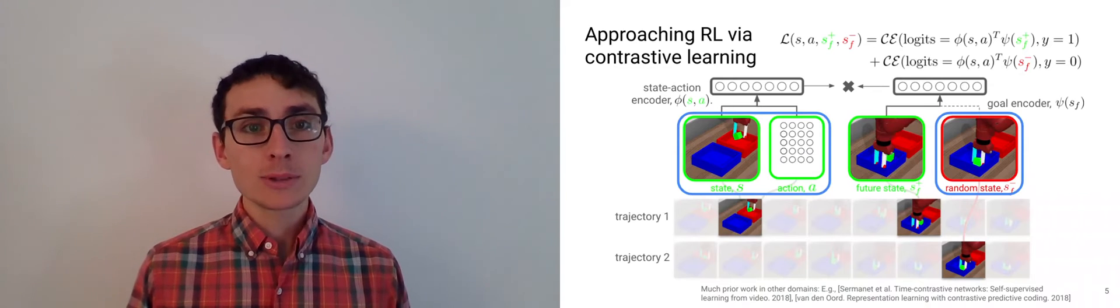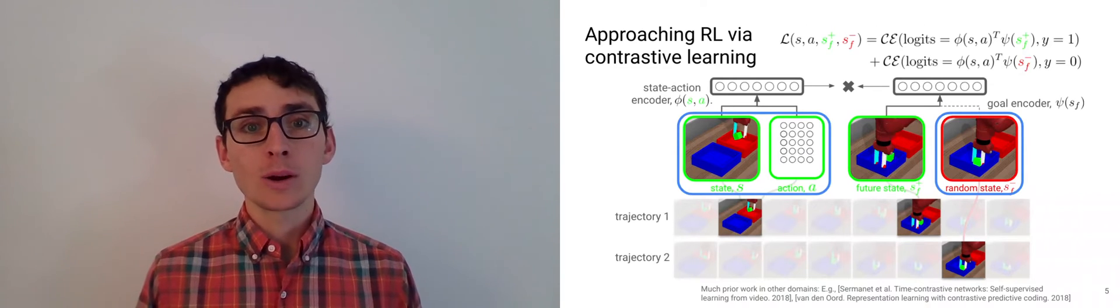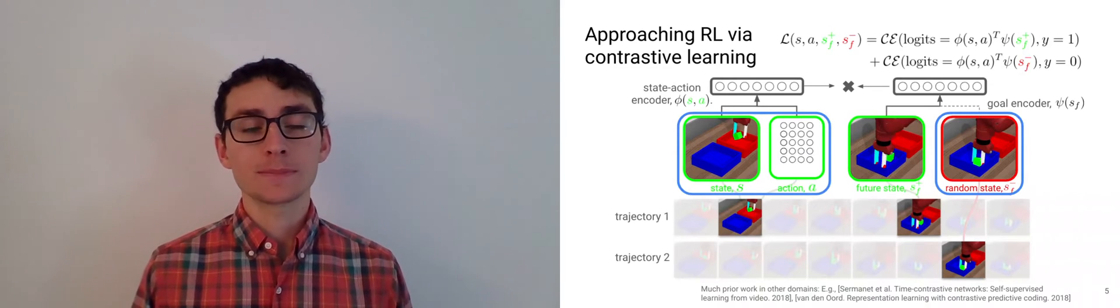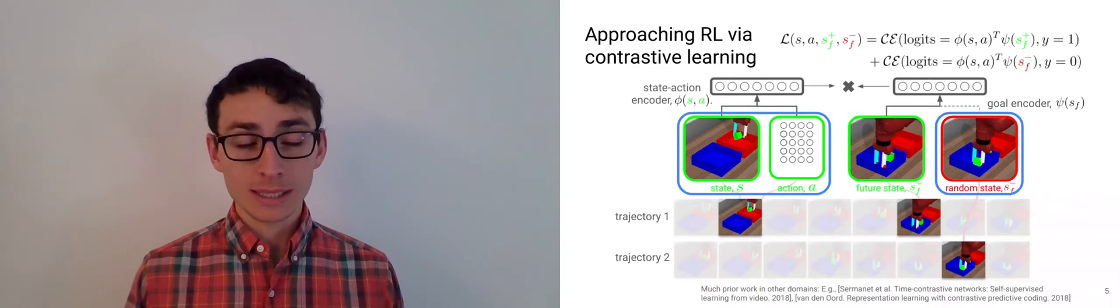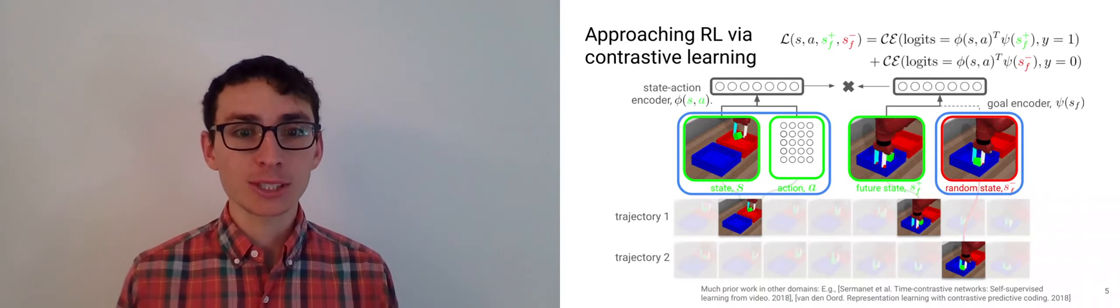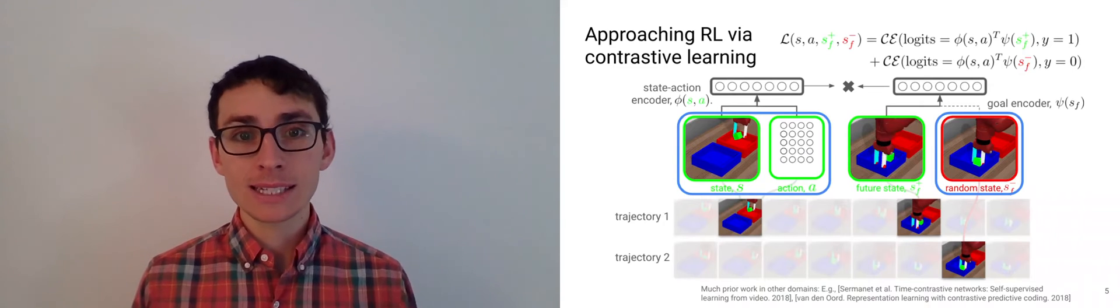Now, intuitively, these representations will allow us to reason about what states are we likely to visit in the future. And importantly, they will allow us to figure out which actions are likely to get us to the desired goal state.